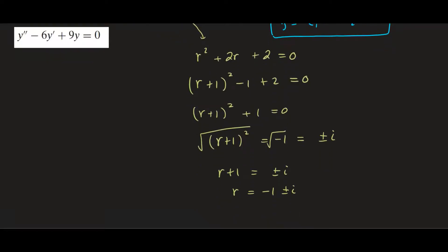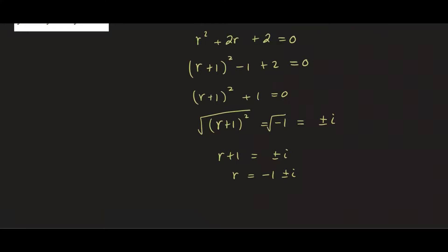So the solution would look a little bit different. So this can be written as alpha plus and minus beta i where alpha is negative 1 and beta is 1.